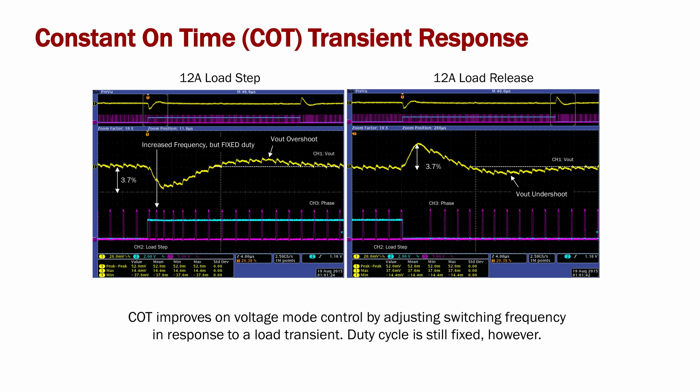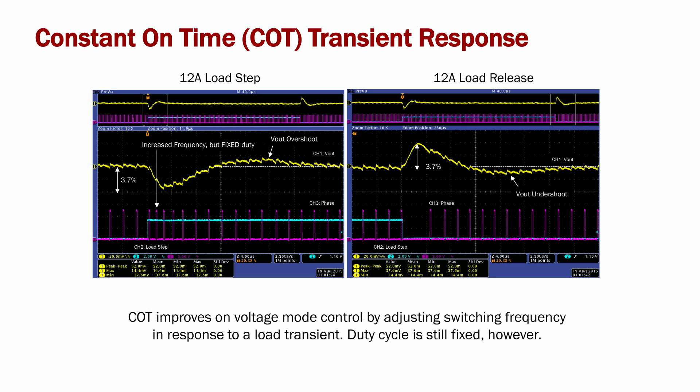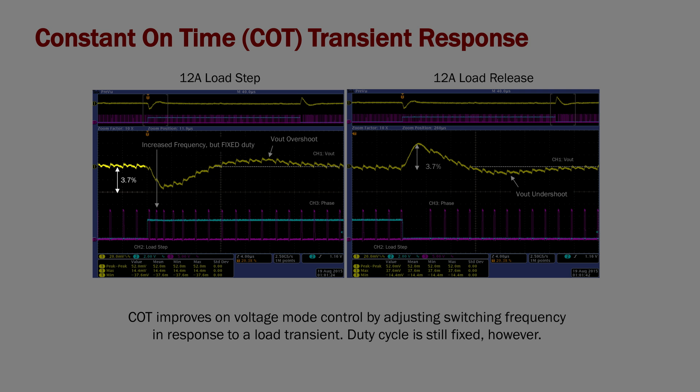Here we are showing a similar scope shot for a constant on-time modulator. Channel 1 is the output voltage, channel 3 is the switch node, and channel 2 is the load step. For a constant on-time architecture, when a load step is applied, the switching frequency temporarily increases, but the duty cycle remains fixed. It performs better than a voltage mode controller, with a 3.5% deviation for a load step and approximately a 3.7% deviation for the load release.